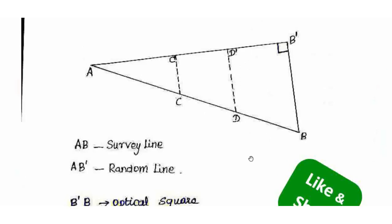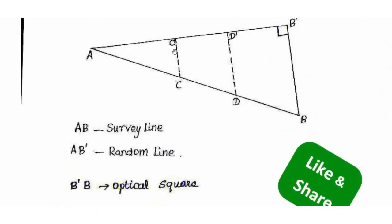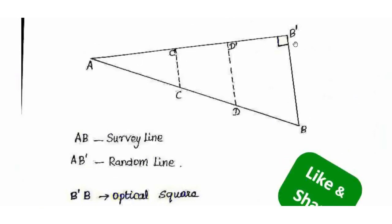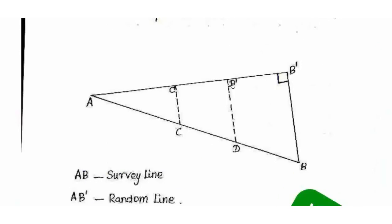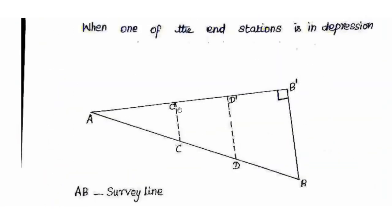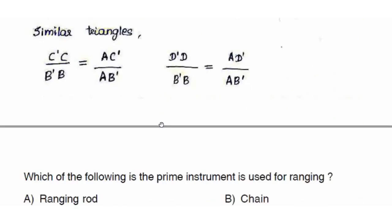Using the similar triangle principle, we calculate intermediate points C' and D'. The ratio CC'/BB' equals AC'/AB'. From this, we calculate the positions of C' and D', which are the intermediate points. This is the random line method of ranging, used in cases of thick vegetation or thick forest.